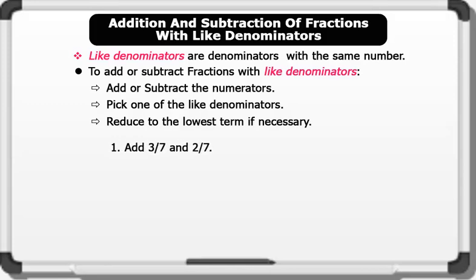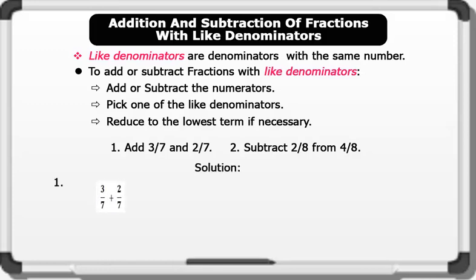Example 1: add 3 over 7 and 2 over 7. Example 2: subtract 2 over 8 from 4 over 8. Solution 1: 3 over 7 plus 2 over 7 — since the denominators, which is 7, are the same, we pick one 7, then we add the numerators.